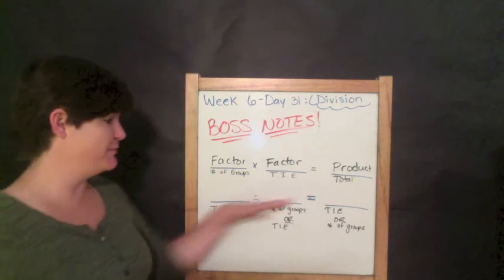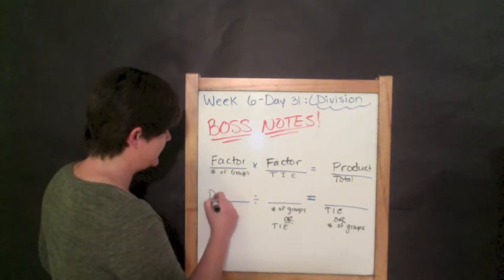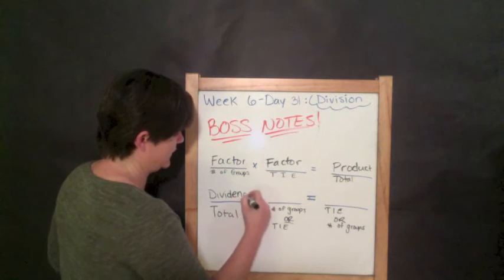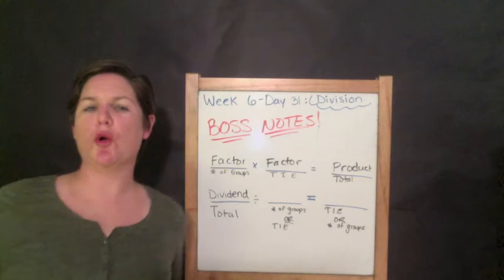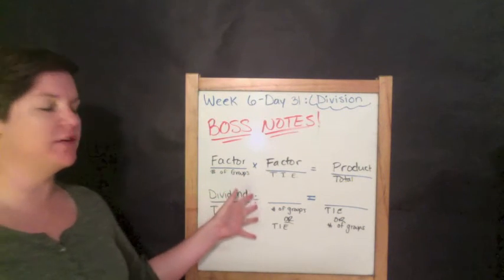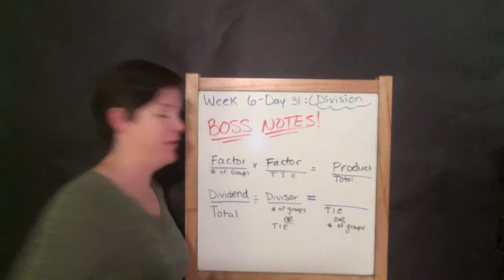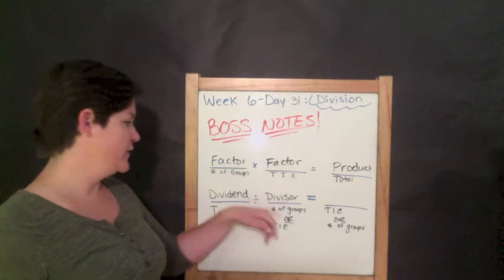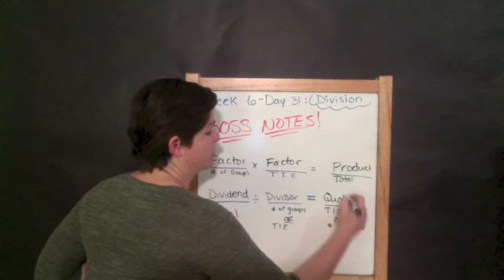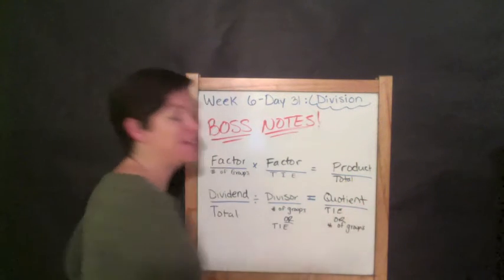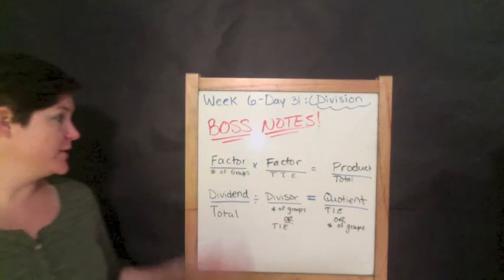But these terms, I love these blanks up here because they have fancy names. The first one, the total, we call that the dividend. Write that word in there, dividend. That's the total amount that you have. And you're taking that total and you're dividing it by the divisor. The thing that's doing all the dividing. To get, and this is a fancy word, we're finding the product for multiplication, but for division, we find the quotient. So you'll see in your workbook that it says to find the quotient. So those are the boss notes that you need.